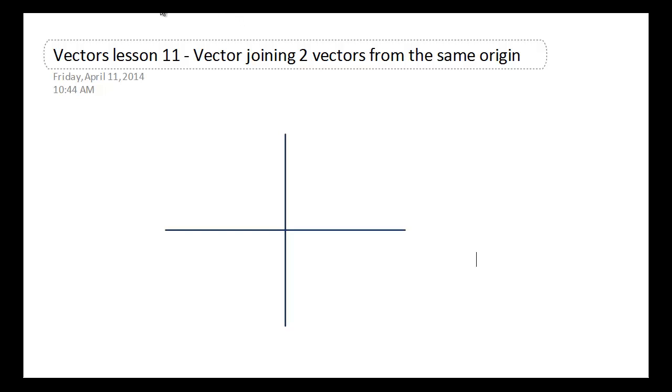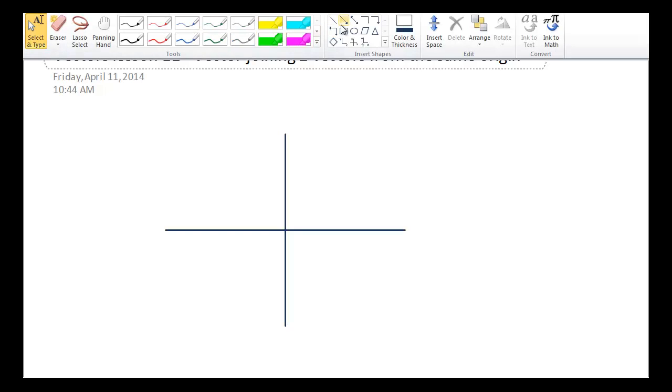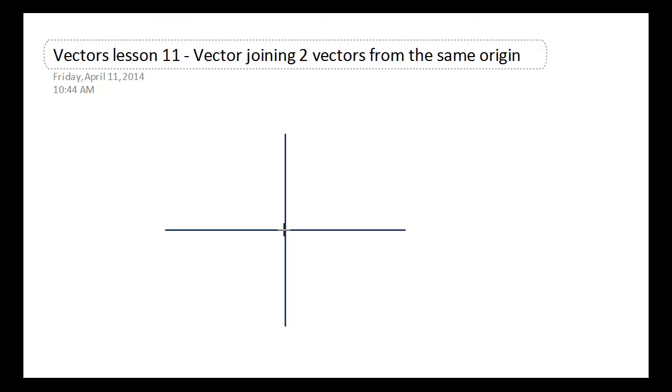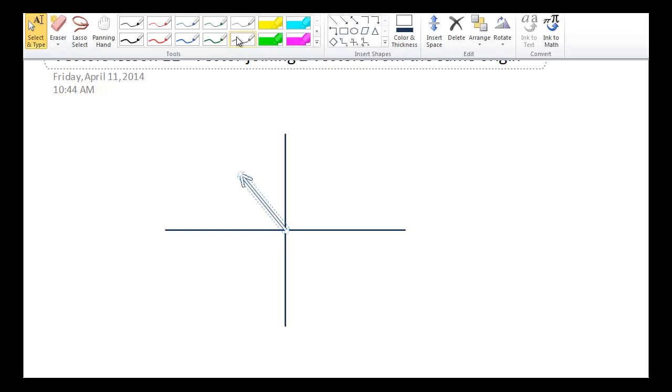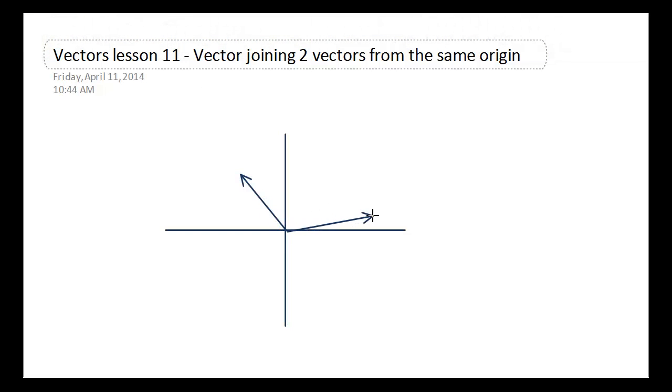So the first thing I'm going to do is draw a Cartesian plane. And then what I'm going to do is draw two vectors coming out from the origin. So let's draw a vector over here. And let's draw a vector over here. Just imagine that they're both coming from the origin, as I said before.